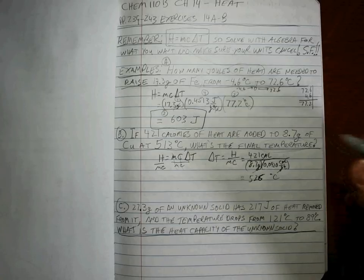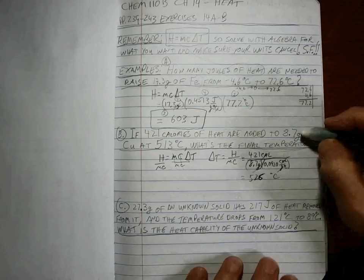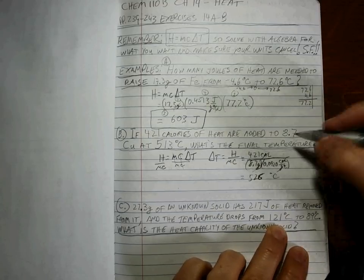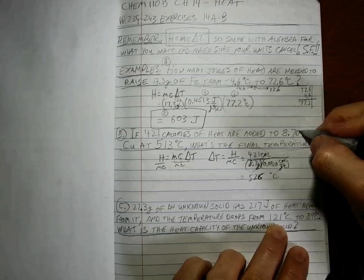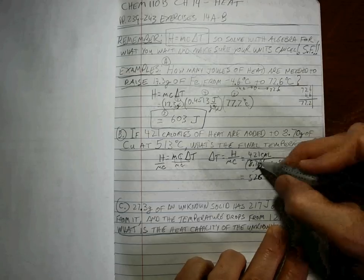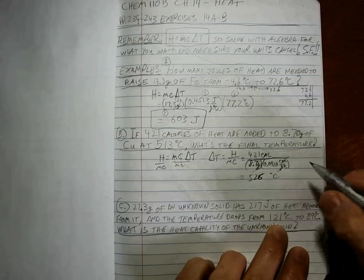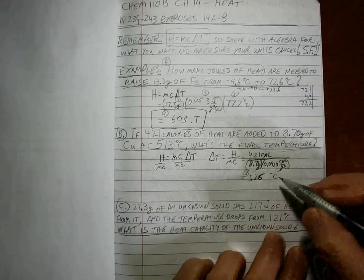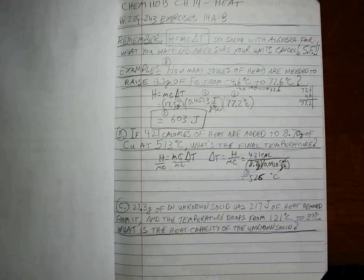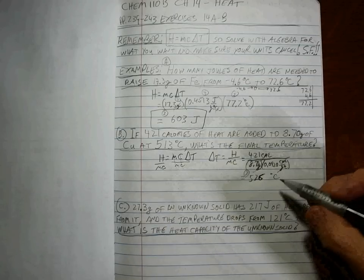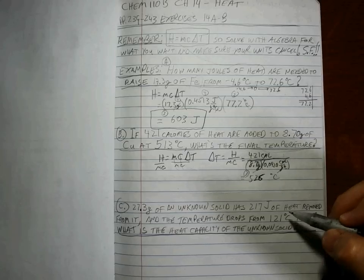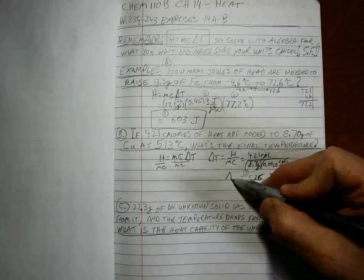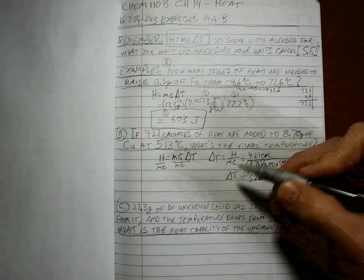I think what we'll do is we're going to change this for just a second for you, just to make things simpler on this problem. I promise this will be important as we move forward. We want this to be three sig figs, okay? So 526°C. Now what is that? Is that the final temperature? No it's not. Delta T here is what we're solving for. We're solving for the change in temperature. So here's a big question.